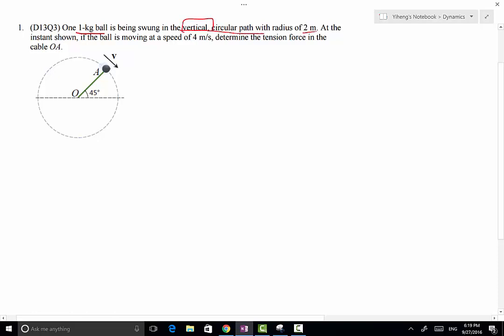in the vertical circular path with radius of 2 meters. The vertical, this word right here gives us the information that weight has to be taken into consideration. So at this instance shown in the image, if the ball is moving at a speed of 4 meters per second, we need to determine the tension force in cable OA.